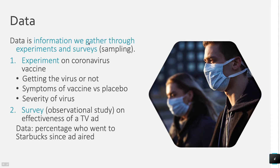In an experiment, you're going to actually do something to the subject — like potentially give them the coronavirus vaccine — to see what effect that has. Those who get the vaccine, do they act differently than those who got the placebo, which is like a fake vaccine? Subjects won't know whether they're getting the vaccine or the fake vaccine. That will help the researcher know for sure that if the vaccine group had better results, it was because of the vaccine and not because they thought they got it.